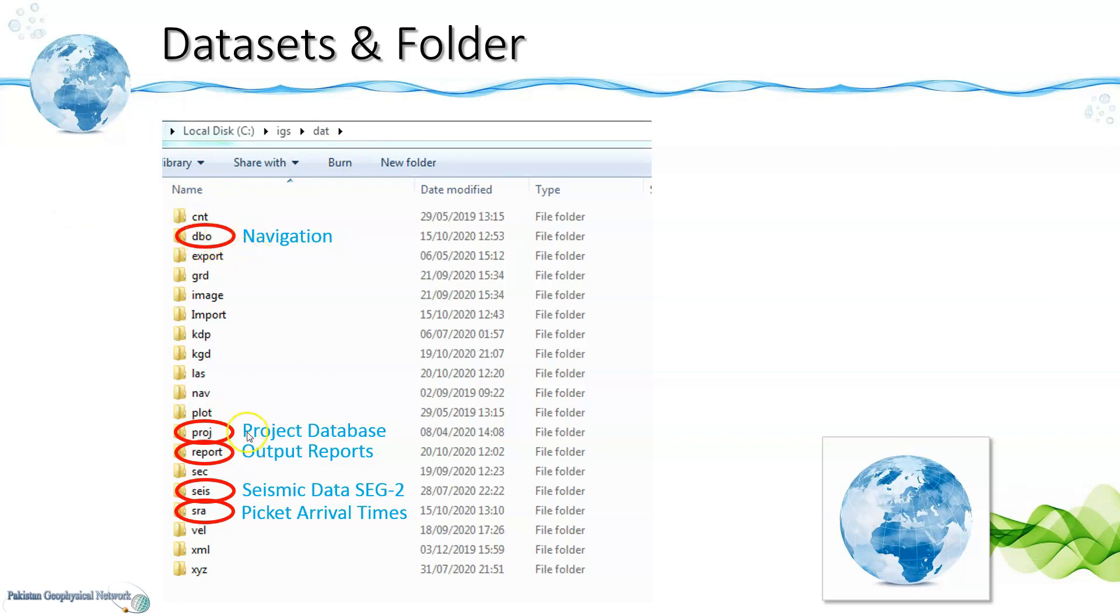For the CIARA software we would be storing the navigation data in the DBO folder, the project database in the branch folder, the output reports would be generated in the report folder, the seismic data in SEG2 format will be in the SEGY folder, and the output files containing the arrival times as well as the travel time inversion solutions will be created in the SRF folder.